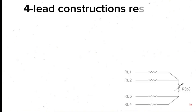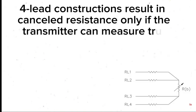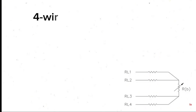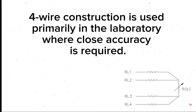Four-lead constructions result in cancelled resistance, but only if the transmitter can measure true four-wire resistance. Four-wire construction is used primarily in the laboratory where close accuracy is required.